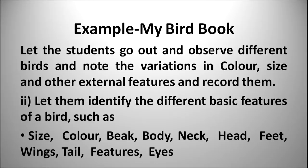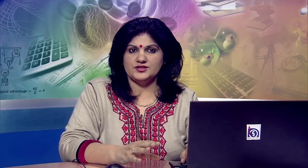Let's take an example of a bird book activity. Let the students go out and observe different birds and note the variation in colors, sizes, and other external features. Let them identify the basic features of a bird such as size, color, beak, body, neck, head, feet, wings, tail, feathers, eyes, and nose. Teach the students how to draw these different features using simple diagrams, color the diagrams using crayons as close to the actual bird color as possible, and stick all the drawings in a scrapbook.